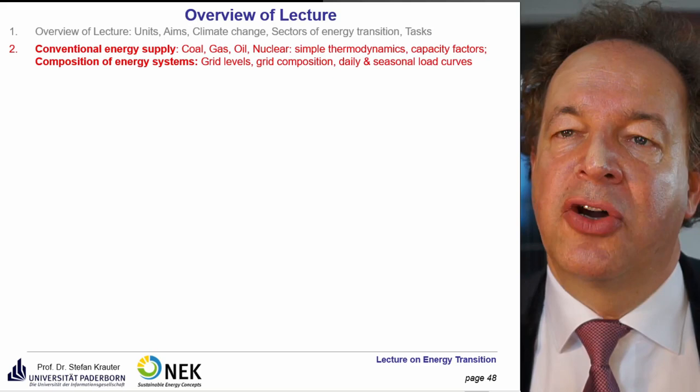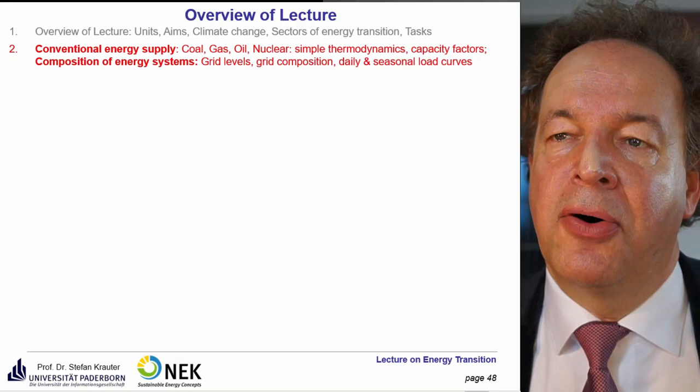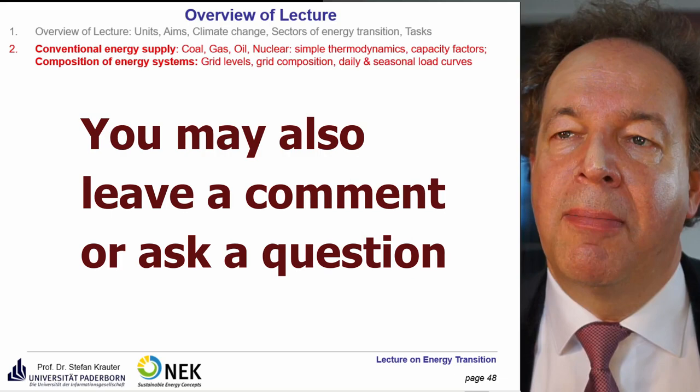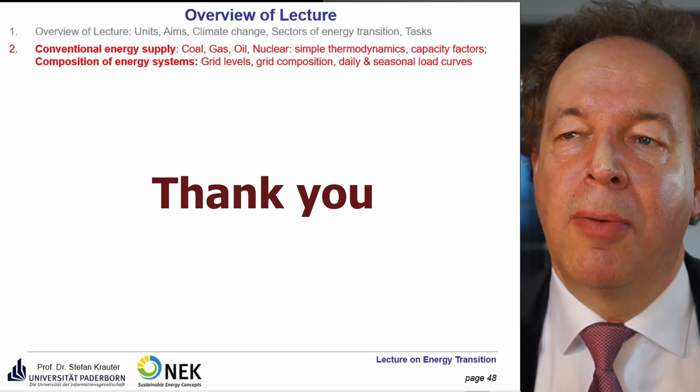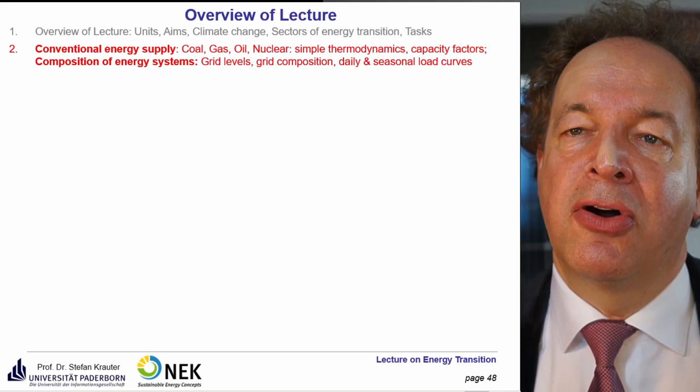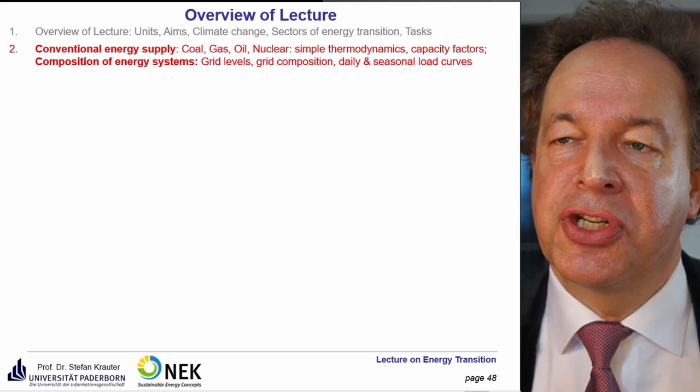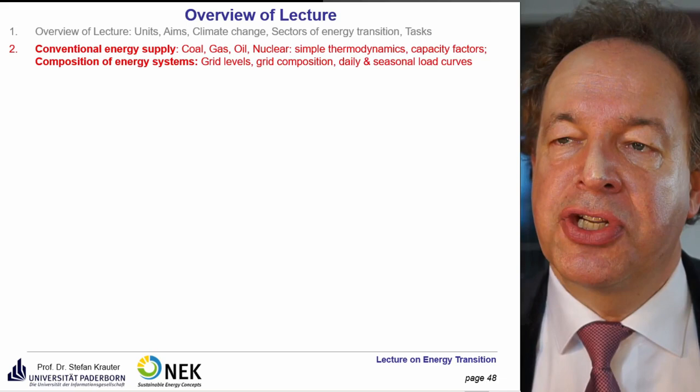We are at the end of the lecture. Next lecture will cover conventional energy supply — coal, gas, oil, nuclear — simple thermodynamics, burning values, the capacity factor (how many hours per year energy is available from solar, wind, or coal plants), the composition of energy systems, grid levels, grid compositions, voltages, and daily and seasonal load curves. Thank you very much.